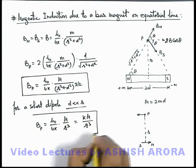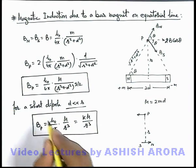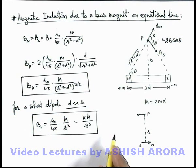Which also you can recall that in case of an electric dipole at an equatorial line, the electric field can be given by kp by r³. The same result we are getting here.